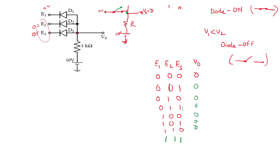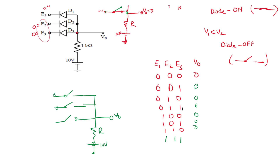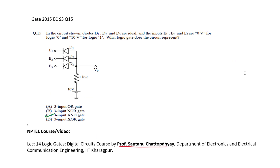When all inputs are at logic 1 — 10 volts applied to all inputs — the N side (cathode) voltage is higher than the P side voltage, so all diodes are off and act as open switches. With no current through resistance R, the full 10 volts from the supply appears at node V0. That means the output is logic 1. This corresponds to a 3-input AND gate, so option C is the right answer.